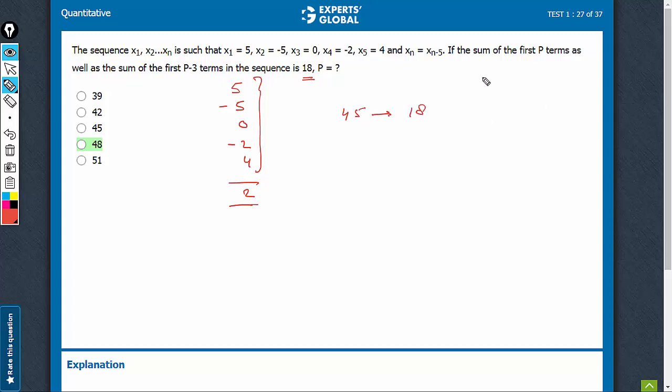But it is saying that the sum of the first p terms as well as p minus 3 terms is 18. So what is the value of p? Sum of 45 terms is 18, so could p be 45?